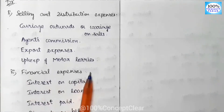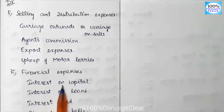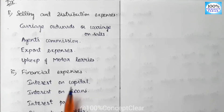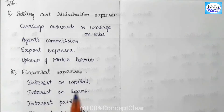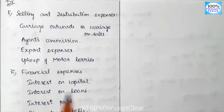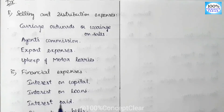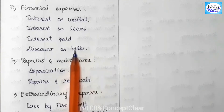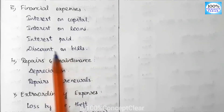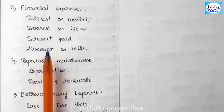Next are Financial Expenses, which are also indirect expenses. The first item is interest on capital — we pay interest on the capital. Next, interest on loan — if we have a loan, we pay interest on it. Then interest paid. Also, discount on bills — when bills of exchange are obtained, we discount those bills, which is also an indirect expense on the debit side.